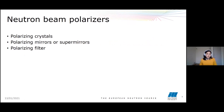The first question is: how can we polarize our neutron beam? This can be done using either polarizing crystals, polarizing mirrors or super mirrors, or polarizing filters. I will first explain how polarizing crystals work.